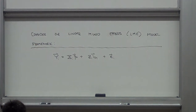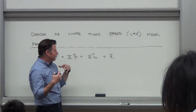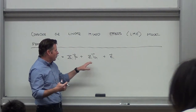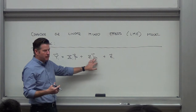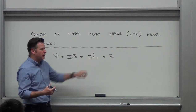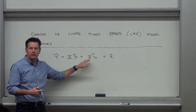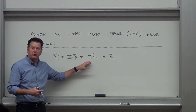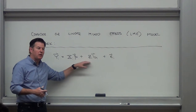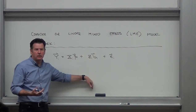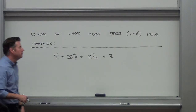The mixed effects model says we can incorporate correlation within the sampling unit by thinking about a random effect on the I-th sampling unit. I might have a different design matrix — for example, just a column of ones, which gives us the random intercept model. Or a column of ones and time, giving a random intercept and slope model.